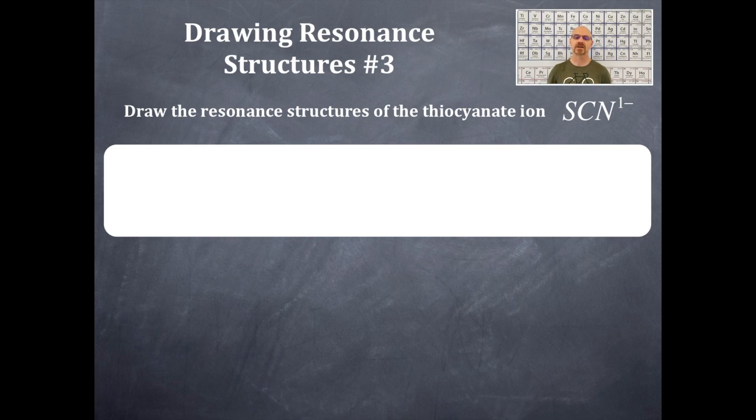The number of valence electrons in sulfur are six, in carbon are four, in nitrogen are five. You're going to add all those up, then divide by two. Find the least electronegative element. That is carbon. That's going to go right in the middle there.